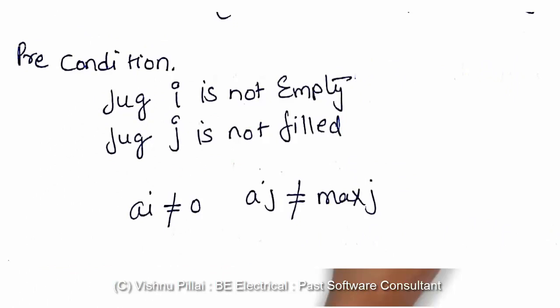While defining the problem, you'll have to consider certain preconditions. For example, jug i is not empty and jug j is not filled.